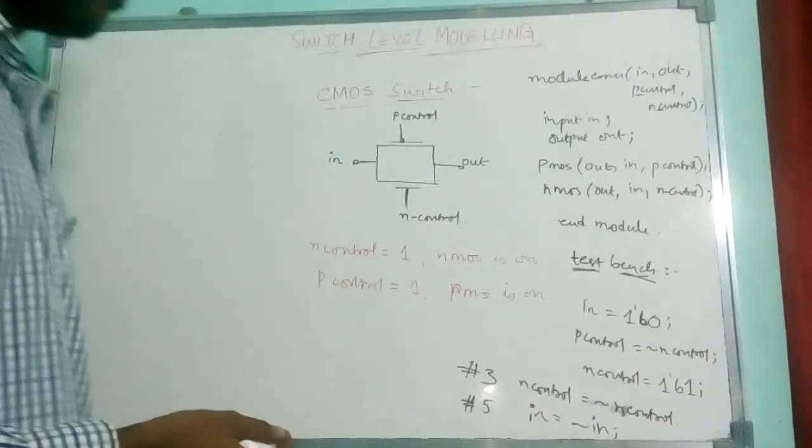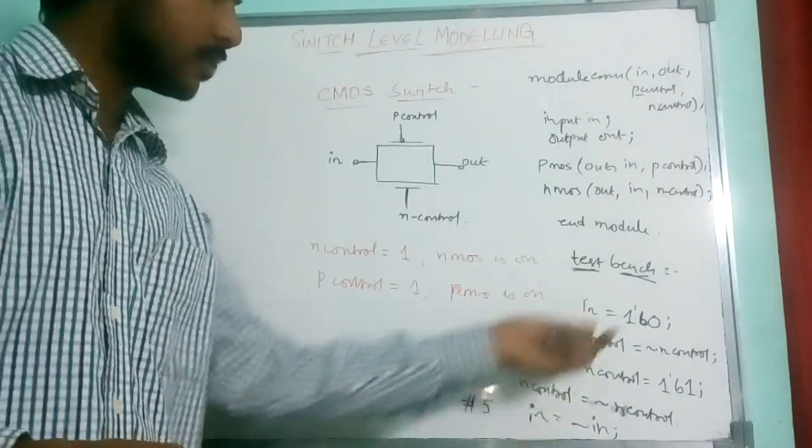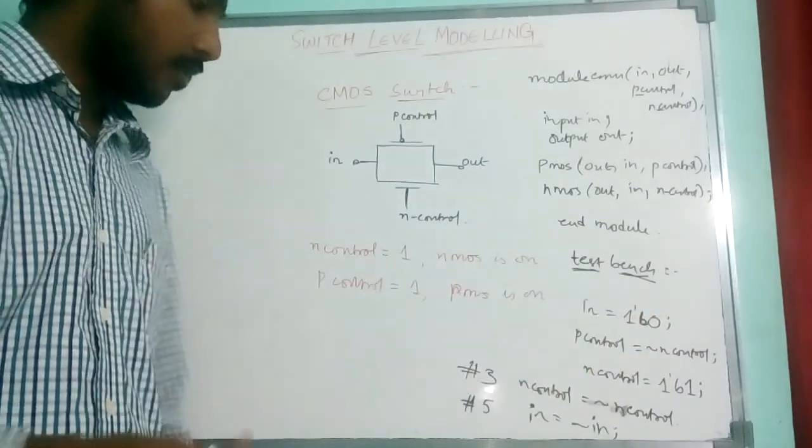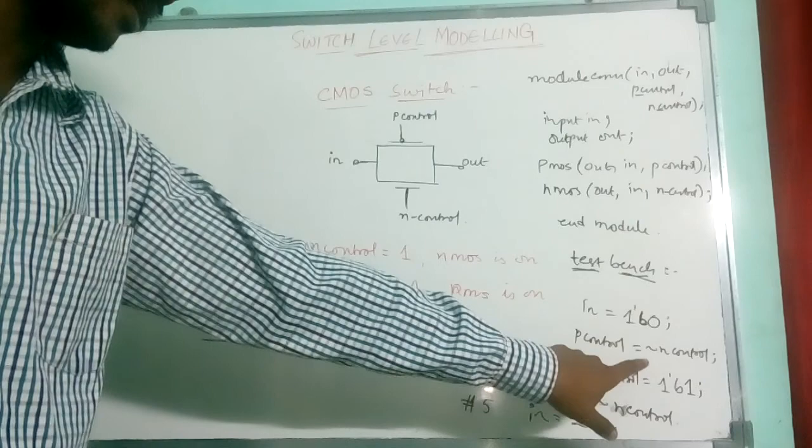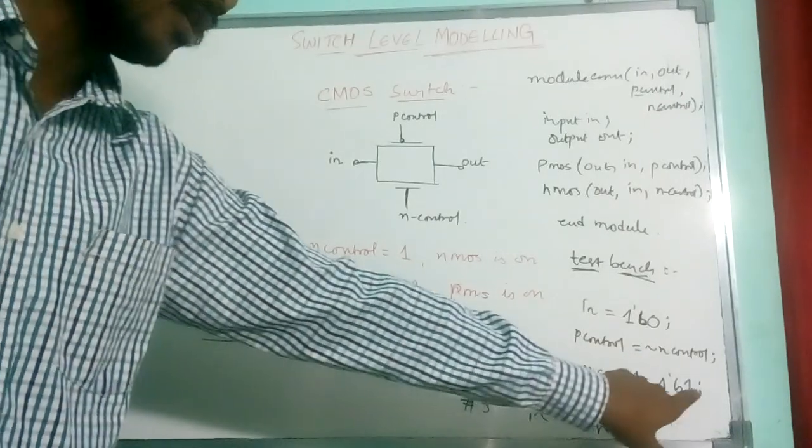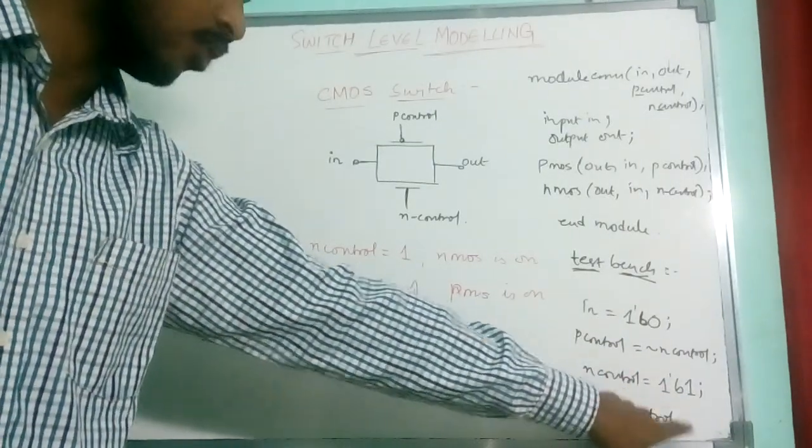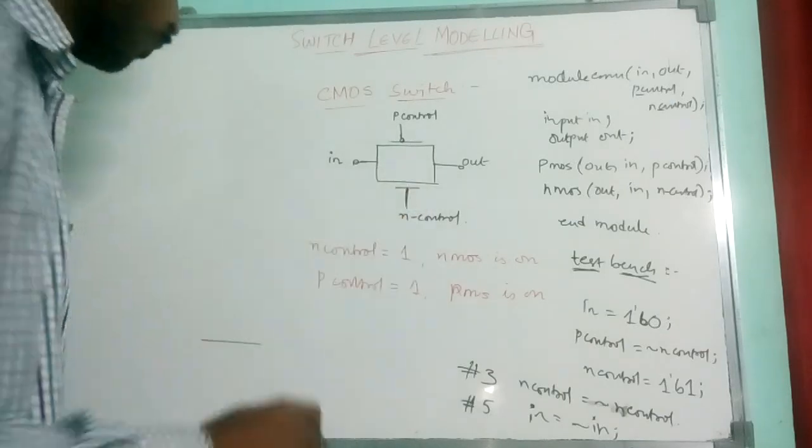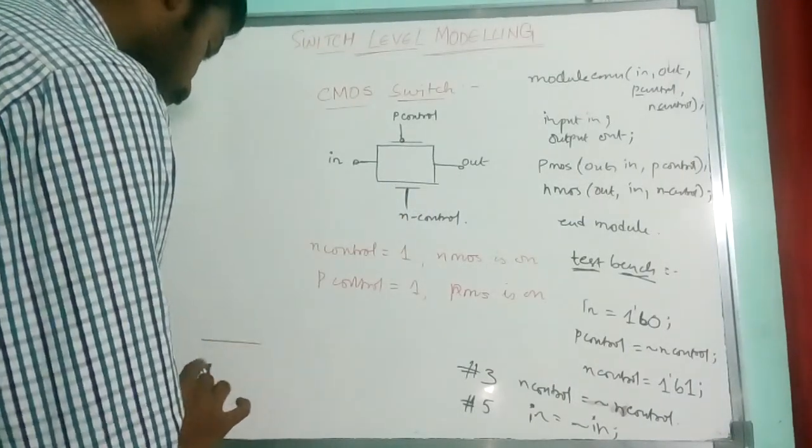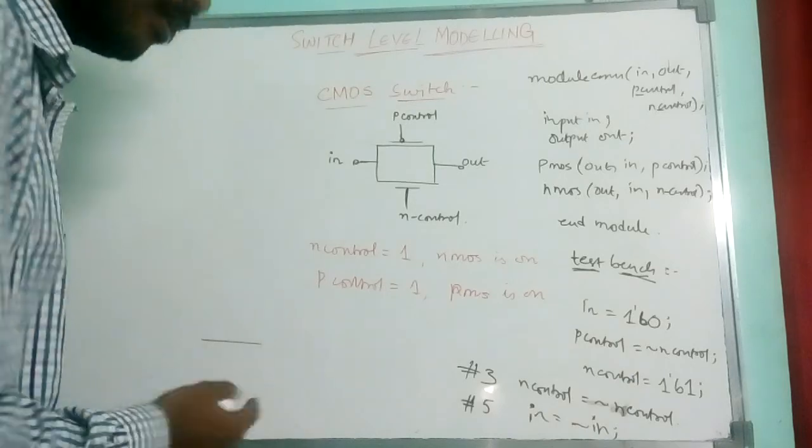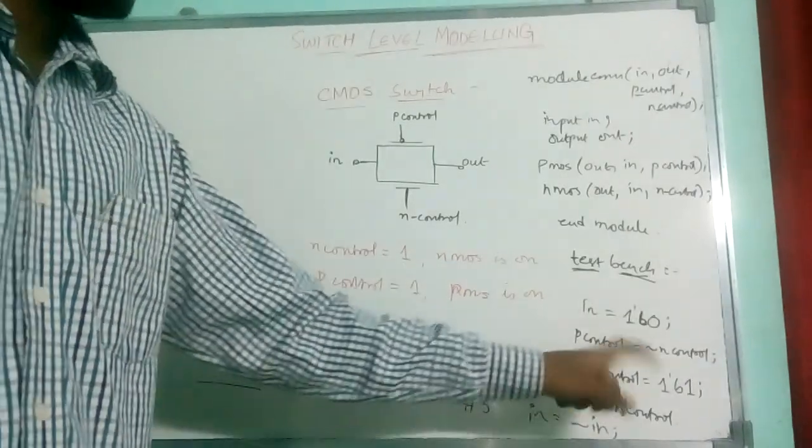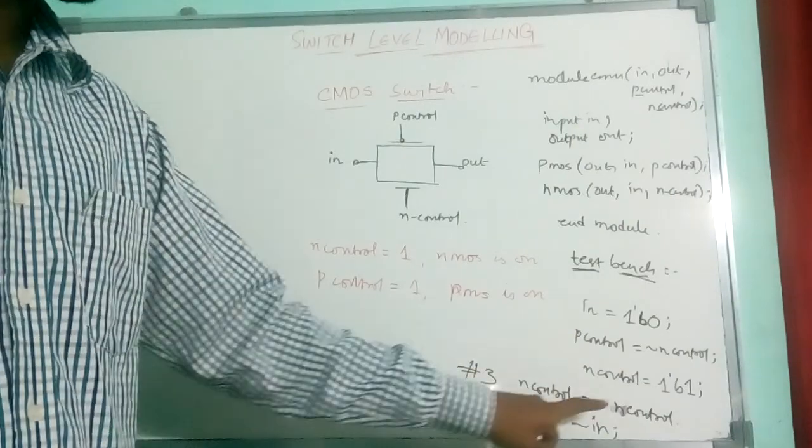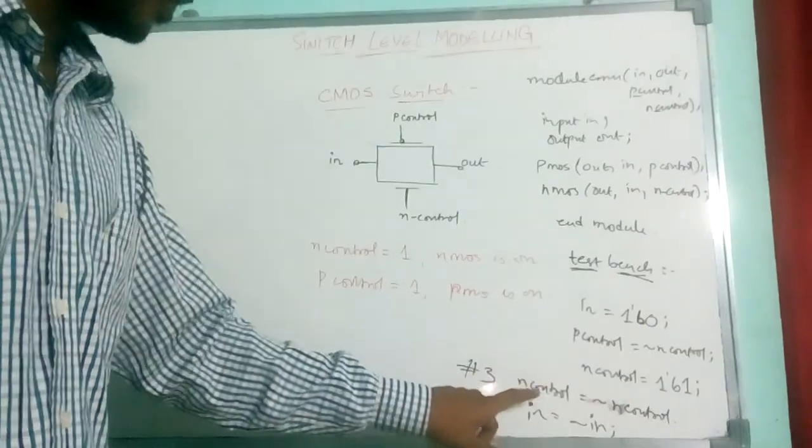That means if you see, whenever input is 0 for the first 5 nanoseconds, whenever input is 0, then my N control is 1 here. N control is 1, that means this switch is on, that means output will be whatever input.